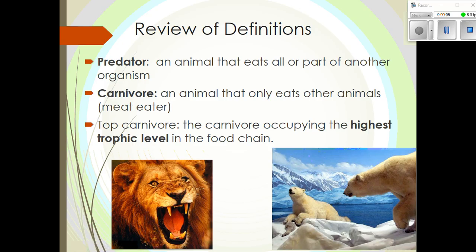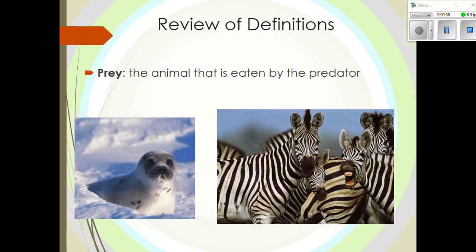A couple of definitions to review. A predator is any animal that eats another organism — if it eats something else that is alive, typically another animal, we call that a predator. Carnivores are predators who eat only meat. Omnivores eat both meat and plant materials. We could also have a top carnivore, who is at the highest level on the food chain — they can eat anything beneath them and nothing hunts them. The prey is the animal that gets eaten by the predator.